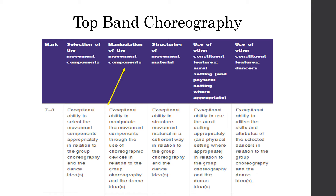I've selected here the top bands — getting seven to eight marks in each of the bands. Today specifically we're just going to look at where that yellow arrow is: manipulation of the movement components. Reading the seven to eight band: exceptional ability to manipulate the movement components through the use of choreographic devices in relation to your group choreography and the dance idea. Every single one of them links to the dance idea — we are always linking back to the stimulus, the choreographic idea, the choreographic intention, what you've created.